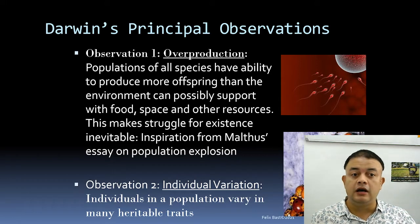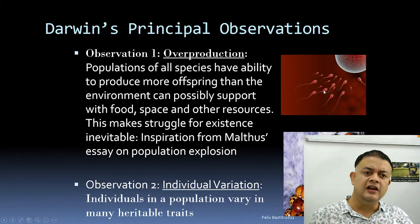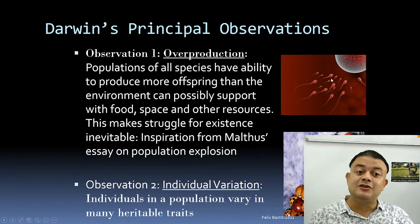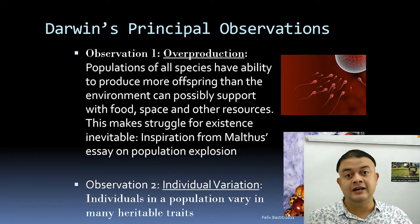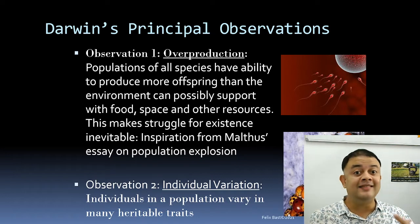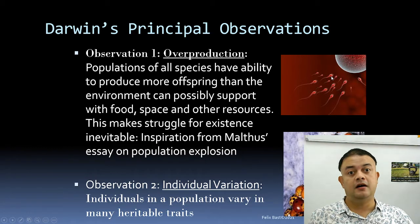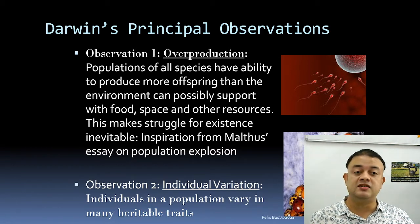Consider human sperm — millions are ejaculated but only one can fertilize the ovum. If every sperm could fertilize its own ovum, imagine how many offspring one individual could have. There is a struggle even at fertilization: only the most fit among millions of sperm can fertilize the ovum, so that itself is a selection.